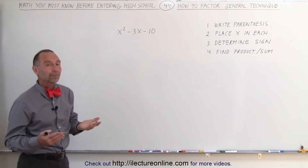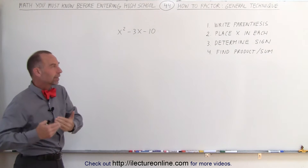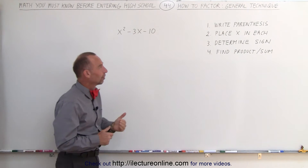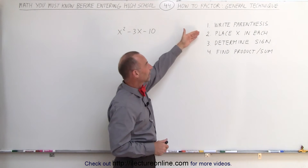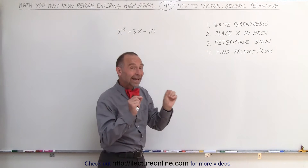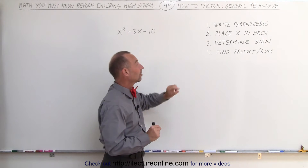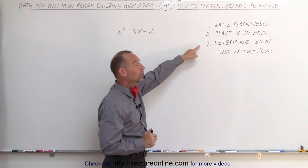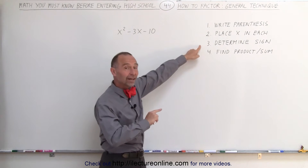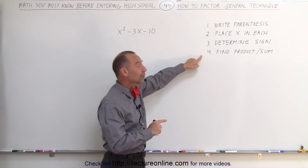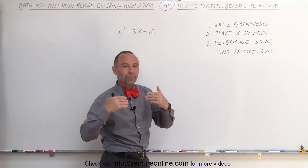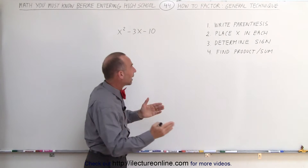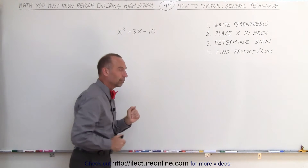How do you do that? Well, there are four definite steps. First you write the parentheses, then you place an x in each of the parentheses, then you determine the signs, and finally you find the numbers such that their product and sum add up to the correct numbers.